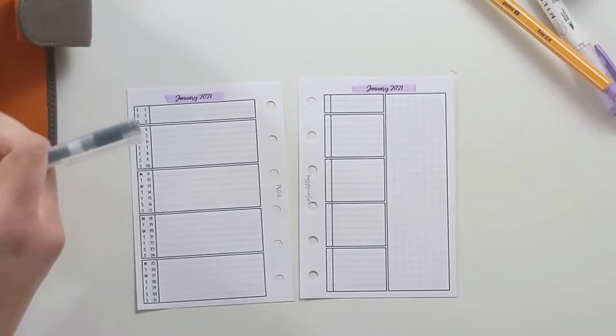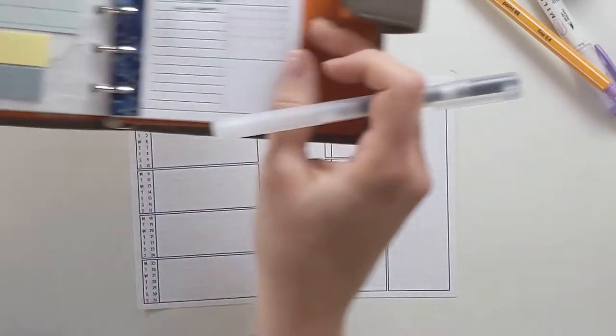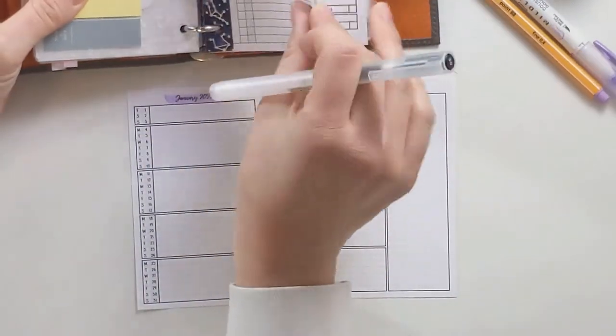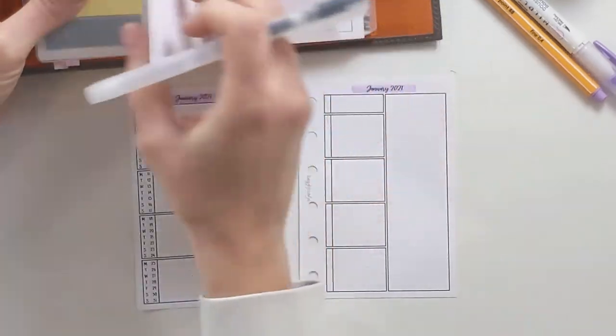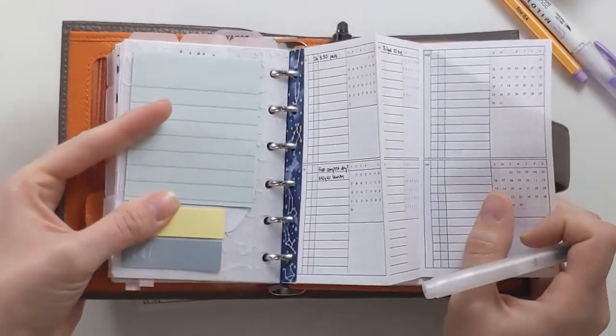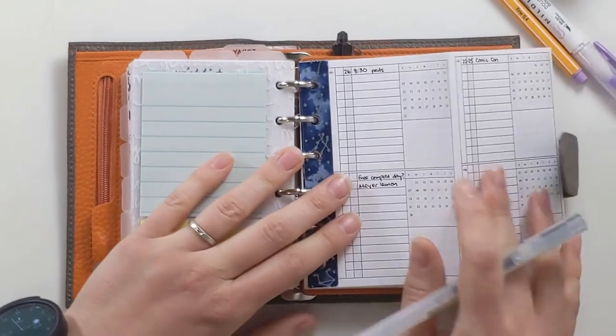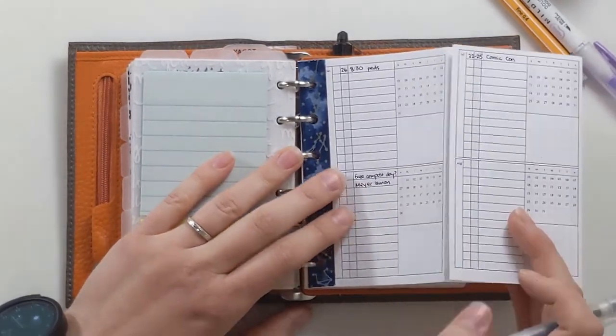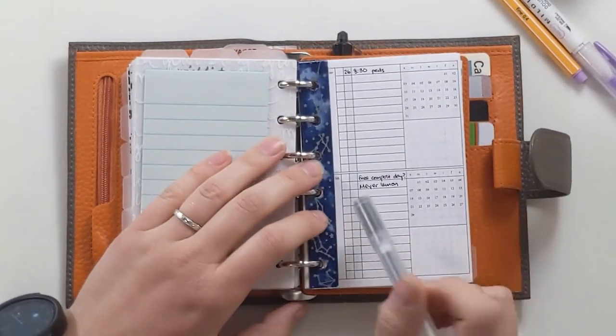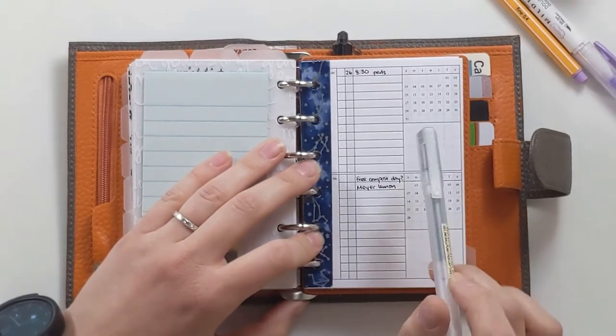So I'm going to go ahead and jump straight to my future log. I'm going to be doing a whole 2021 setup video pretty soon. So you'll get to see all of this, but this is from Peanuts Planner Co. It's the same future log that I've been using for years and I didn't want to switch that up if it's working well.